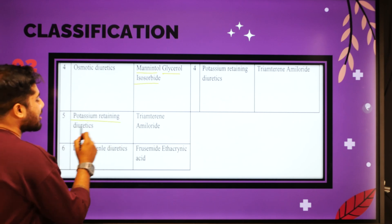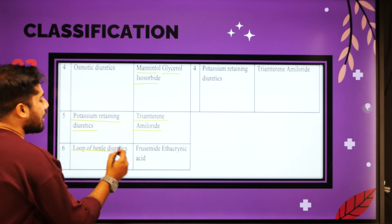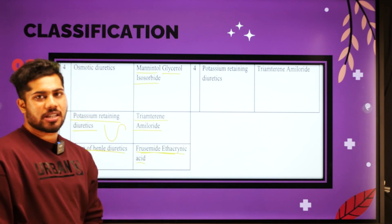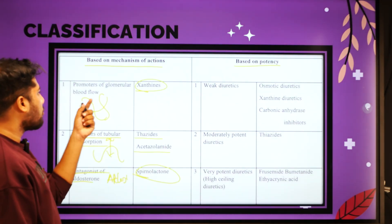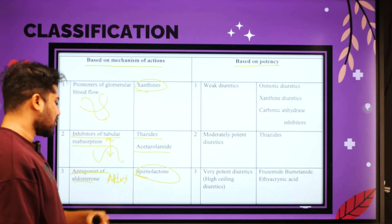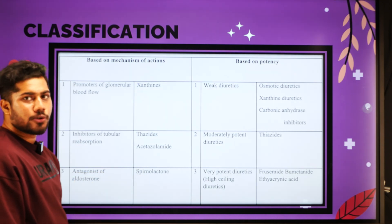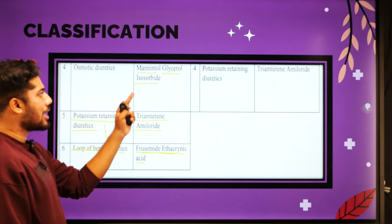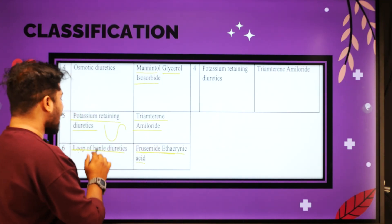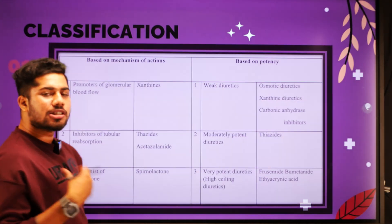Next is potassium-retaining diuretics — triamterene and amiloride. And loop of Henle diuretics — frusemide and ethacrynic acid. So to summarize the mechanism of action classification: promoters of glomerular blood flow (xanthines), inhibitors of tubular reabsorption (thiazides, acetazolamide), antagonists of aldosterone (spironolactone), osmotic diuretics (mannitol, glycerol, isosorbide), potassium-retaining diuretics (triamterene, amiloride), and loop of Henle diuretics (frusemide, ethacrynic acid).